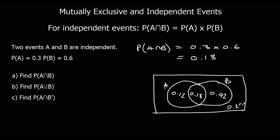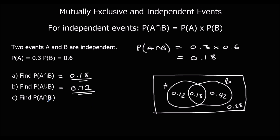Which means we've got 0.28 left on the outside. Now the questions. The probability of A and B — we've worked that out: 0.18. The probability of the union of A and B — that's all the circles together: 0.72. And the probability of A and not B — A is these two bits, not B is these two bits, and 'and' means both of them, so the bit with both lines: 0.12.